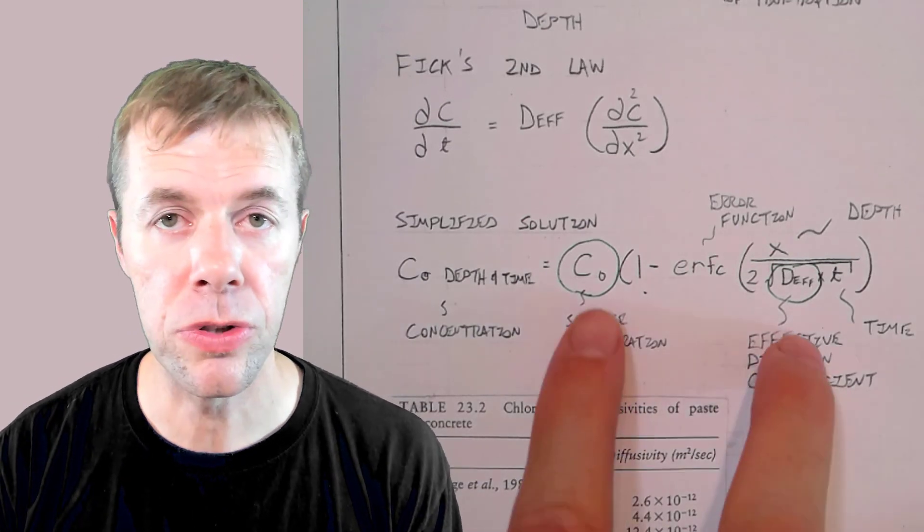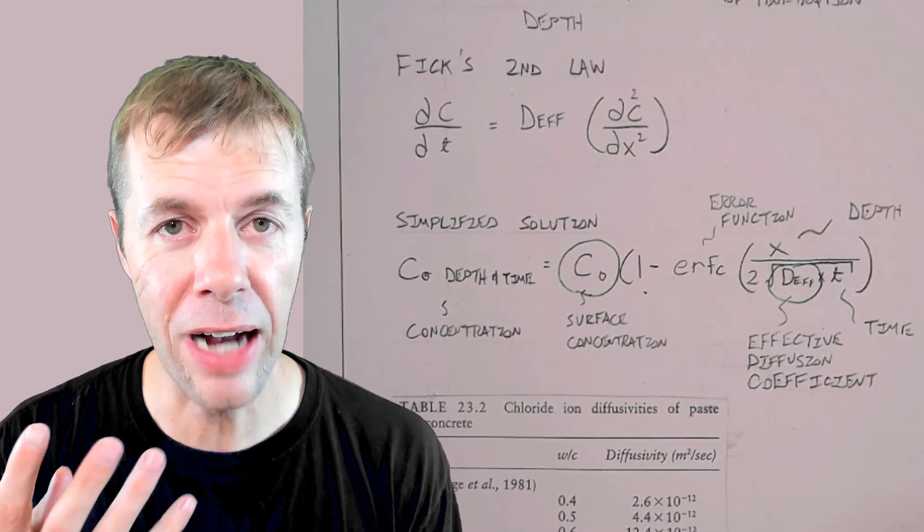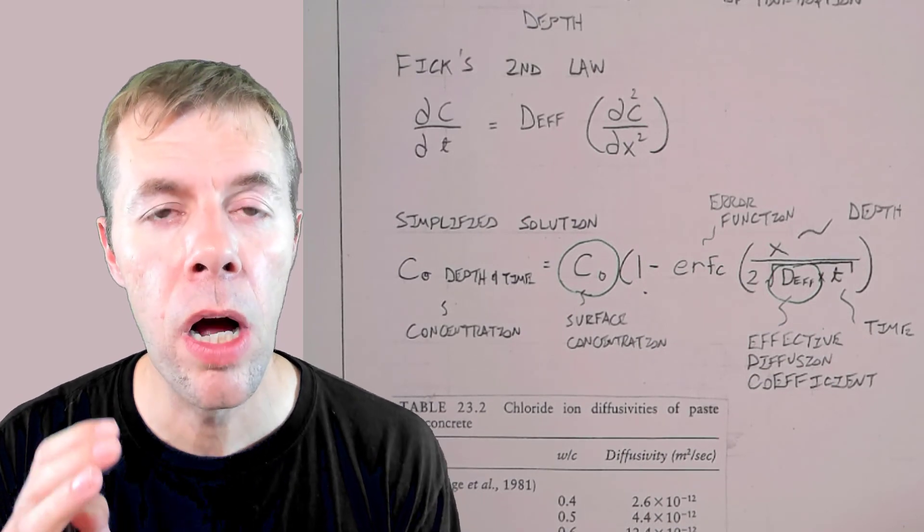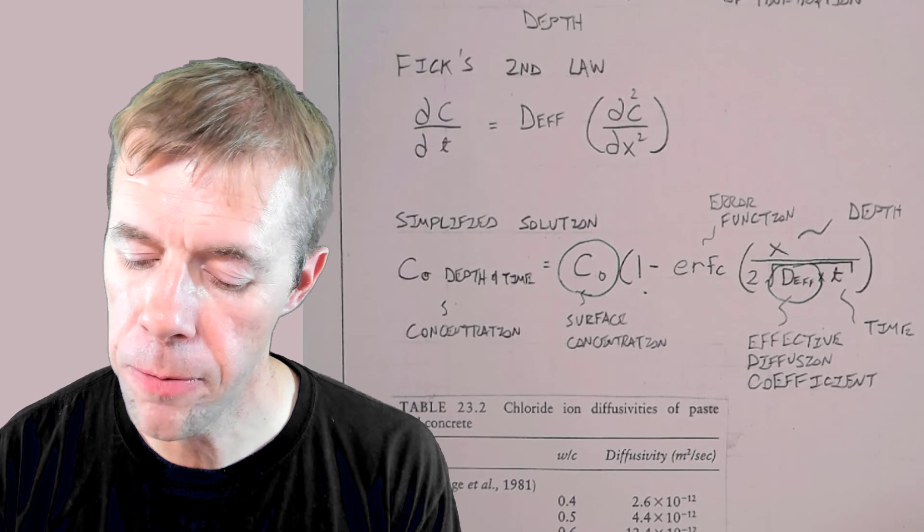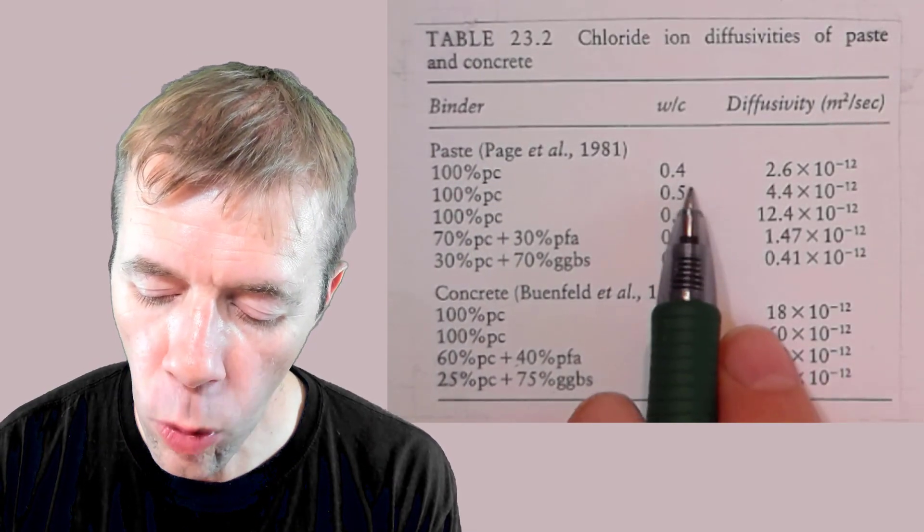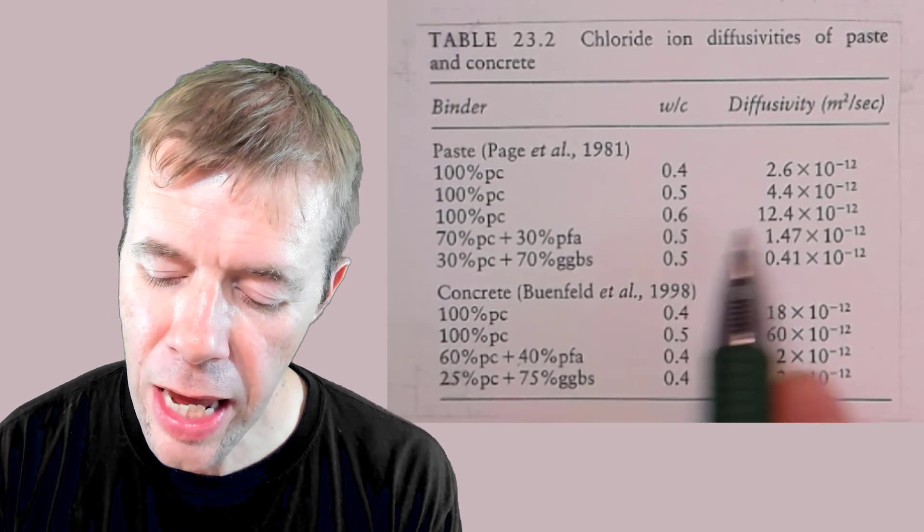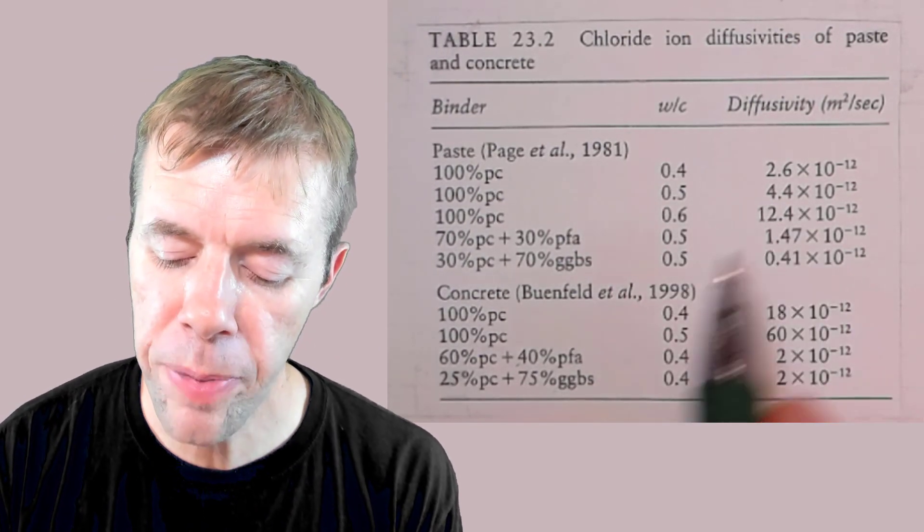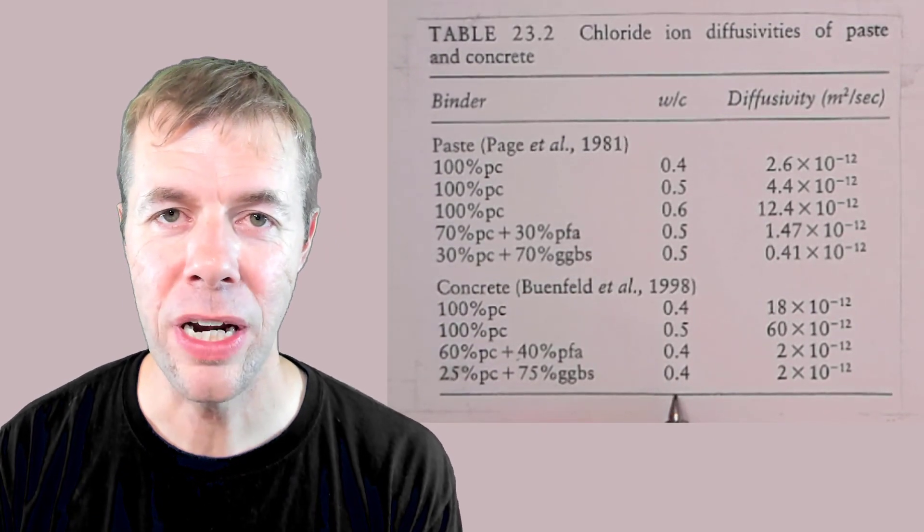And using these two numbers, you can actually forecast into the future how long your concrete is going to last or compare qualities of concrete to one another. Here's an example of this table. Here's where they have three different water to cement ratios. And again, they're showing three different diffusion coefficients. Here's it with paste. And here's the information with concrete.